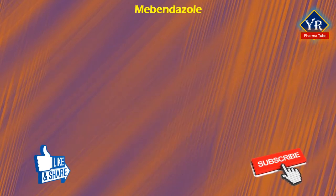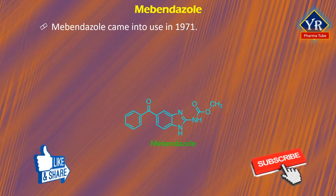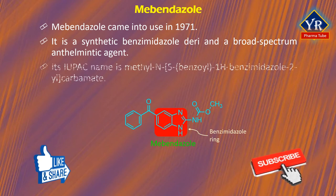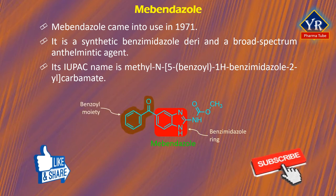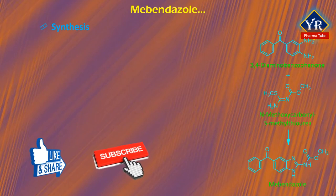The last drug is mebendazole. Mebendazole came into use in 1971. It is a synthetic benzimidazole derivative and a broad-spectrum anthelmintic agent. Its IUPAC name is methyl N-(5-benzoyl-1H-benzimidazol-2-yl)carbamate. Mebendazole is synthesized by reacting 3,4-diaminobenzophenone with N-methoxycarbonyl-S-methylthiourea.